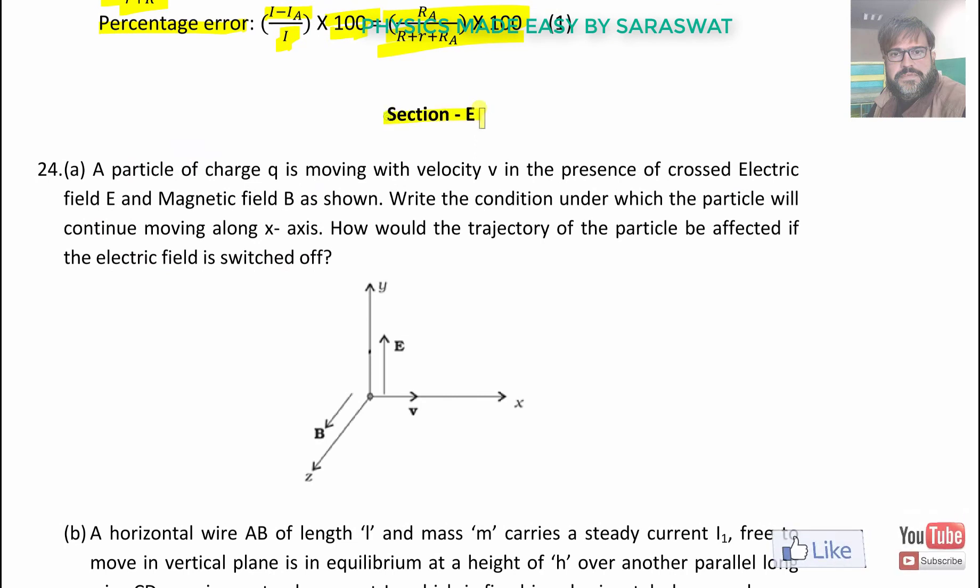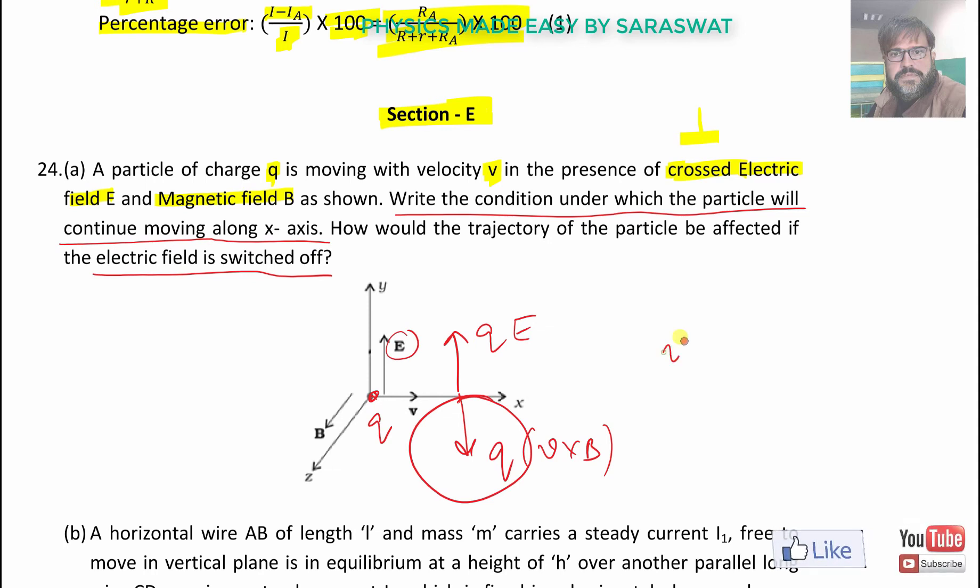Section E last section carrying 5 mark questions. A particle of charge Q is moving with a velocity V in the presence of crossed means perpendicular electric field E and magnetic field B. Write the condition under which the particle will continue moving along x axis. How would the trajectory of the particle be affected if the electric field is switched off? If the electric field is switched off, it will have a circular path. These forces become equal when V = E/B. That is the velocity selector.